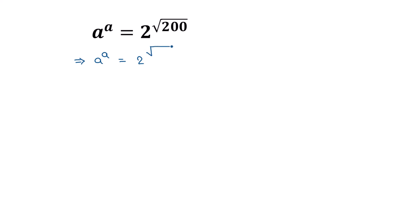Square root of 200 is square root of 25 times 8, which equals 200. So a to the power a is equal to 2 to the power of square root of 25 times 8, which can be written as square root of 25 times square root of 8.